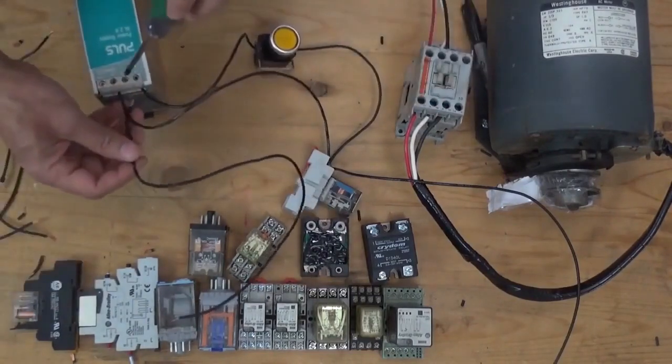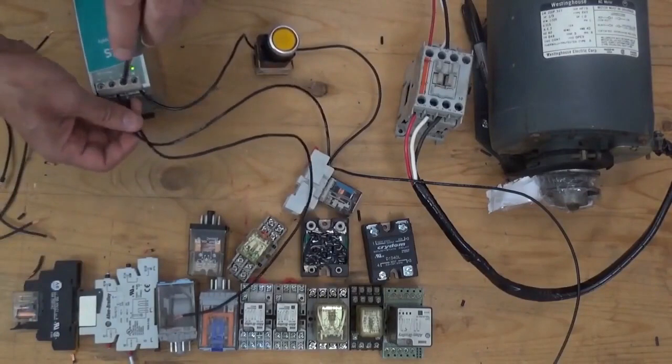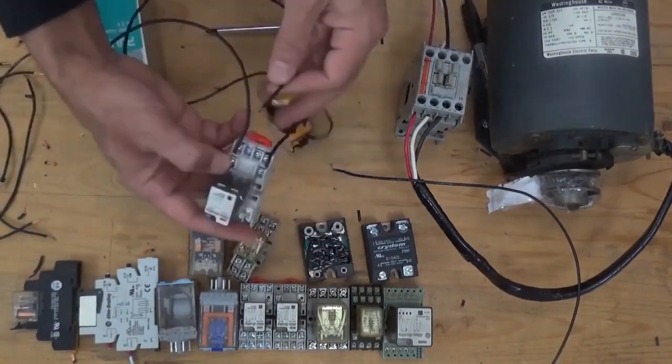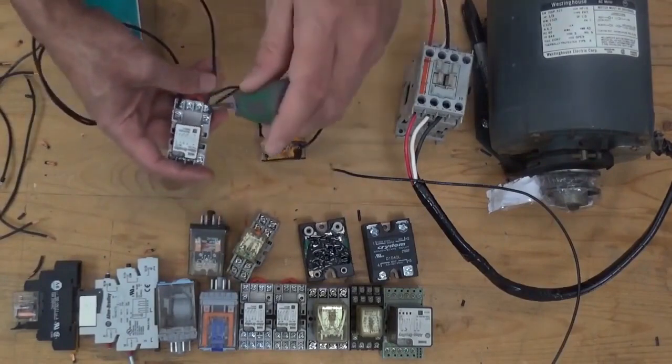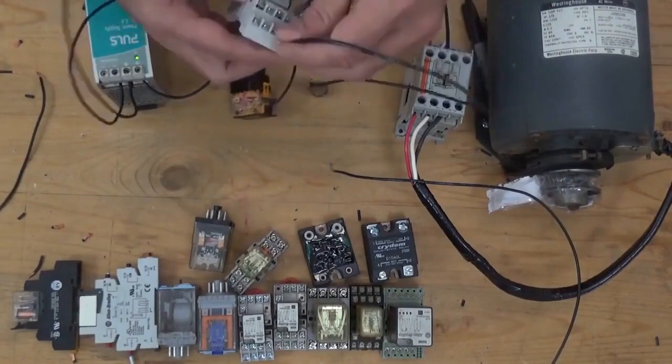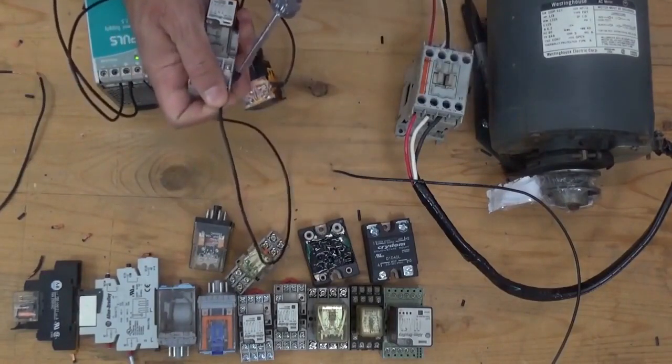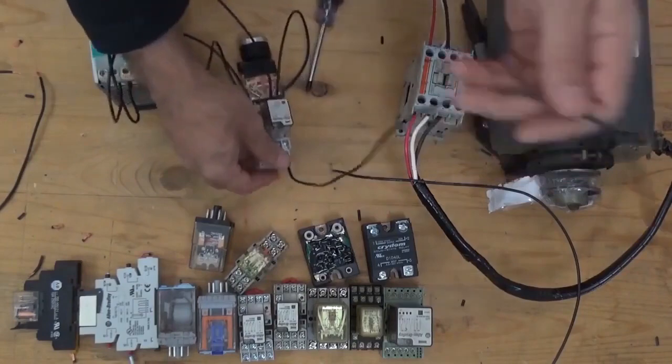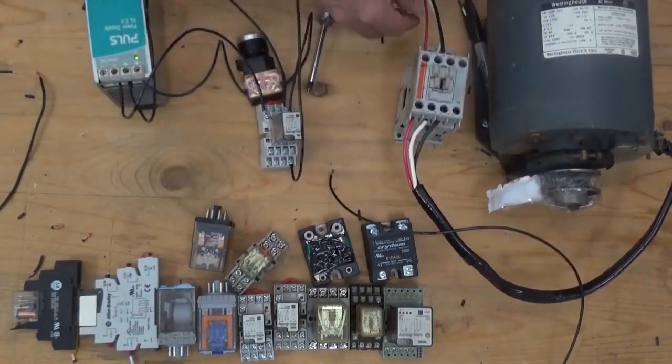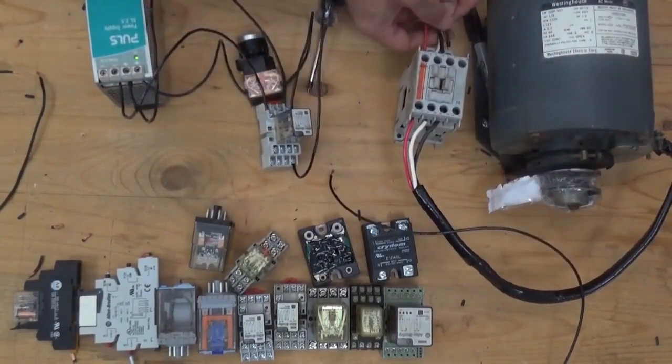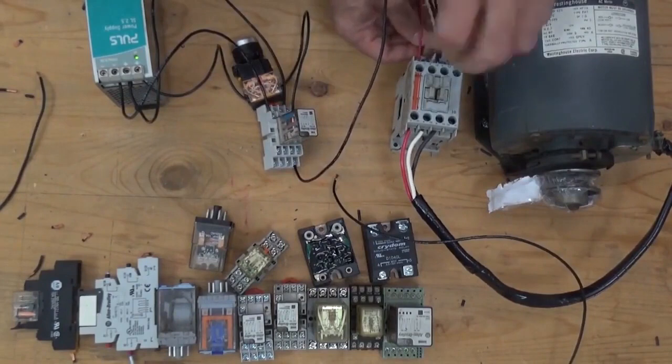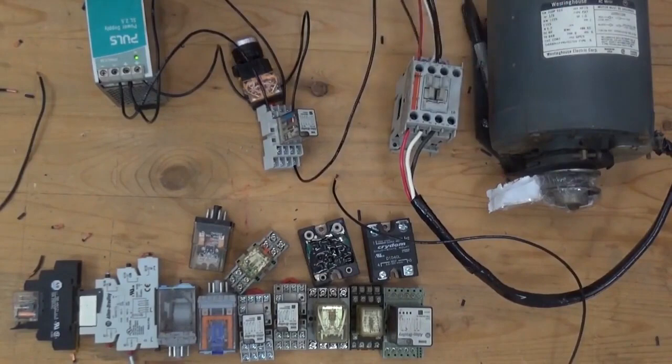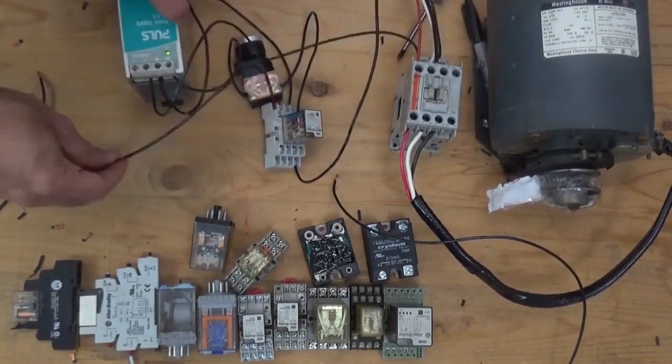From the positive of our power supply, we're going to connect another supply going to the normally open of our relay. From another side of the normally open of the relay, going to the coil of the magnetic contactor. From A2 of our magnetic contactor coil, going back to our negative of our power supply.